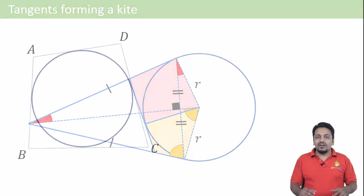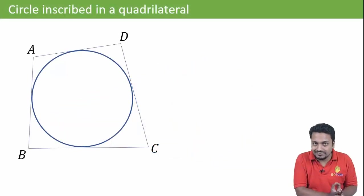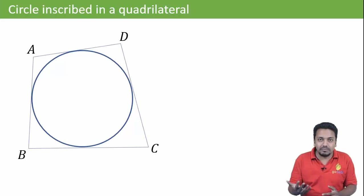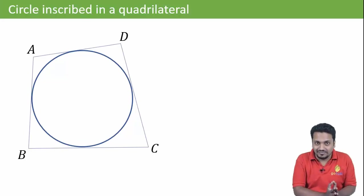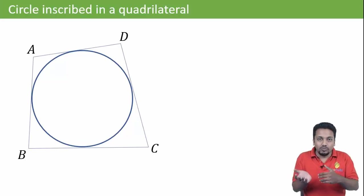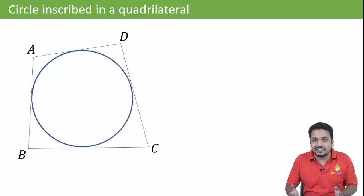Next we have a circumscriptible quadrilateral. Quadrilateral ABCD is circumscriptible — circumscriptible means it has an incircle. Now for a quadrilateral to be circumscriptible, the two pairs of opposite sides should have equal total lengths.